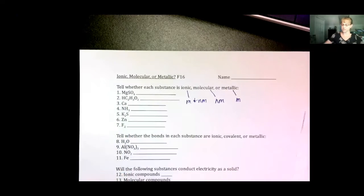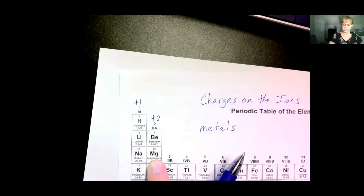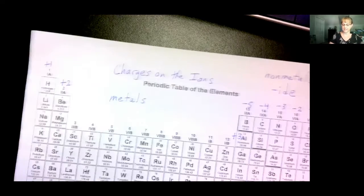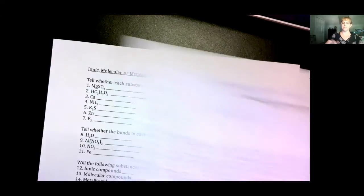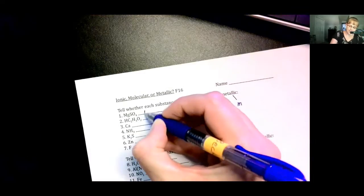So, if you have MgSO4, Mg is a metal, sulfur and oxygen are non-metals, therefore, it is ionic.